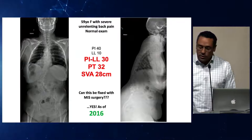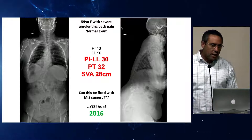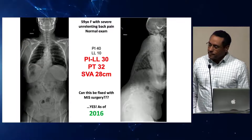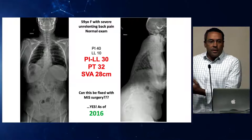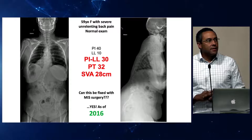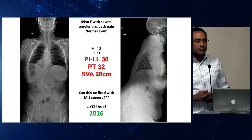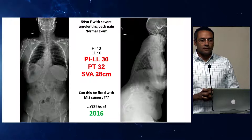This is the marriage of spinal principles and medical technology to advance spine care. Here's a 59-year-old lady with severe unrelenting back pain who failed prolonged, protracted attempts at non-surgical management. Her parameters are pretty dramatically off. The approach here was a multi-level lateral with an L5-S1 TLIF as stage one, then a posterior stage two — which is pretty much how we handled things from 2010 to 2016 and even into 2019.